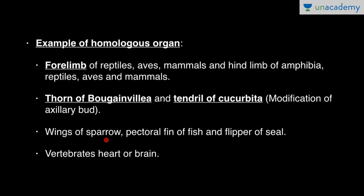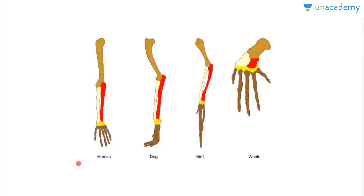Wings of sparrow, pectoral fin of fish, and flipper of seal are also homologous organs. Generally, organs of vertebrates are also considered homologous organs. Here is a diagram showing the four limbs of human, dog, bird, and whale.